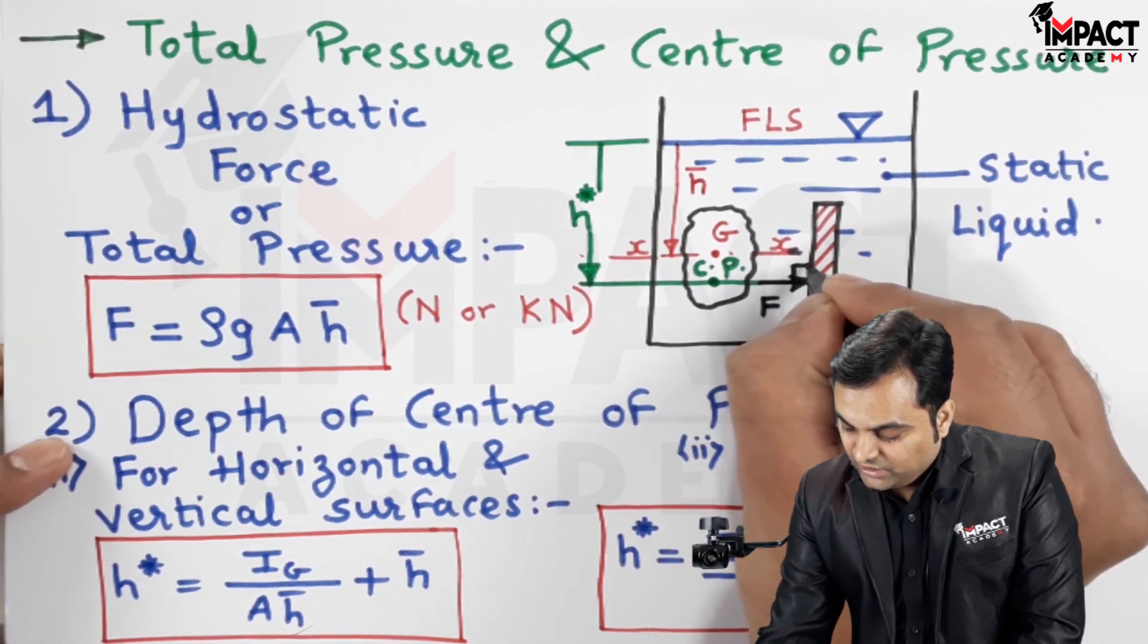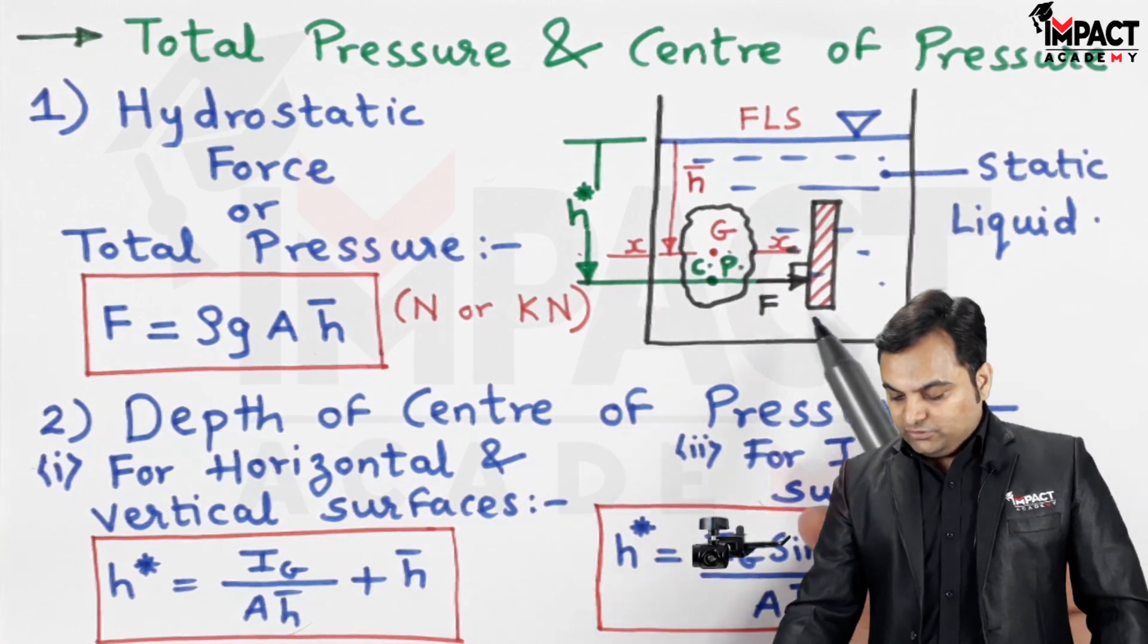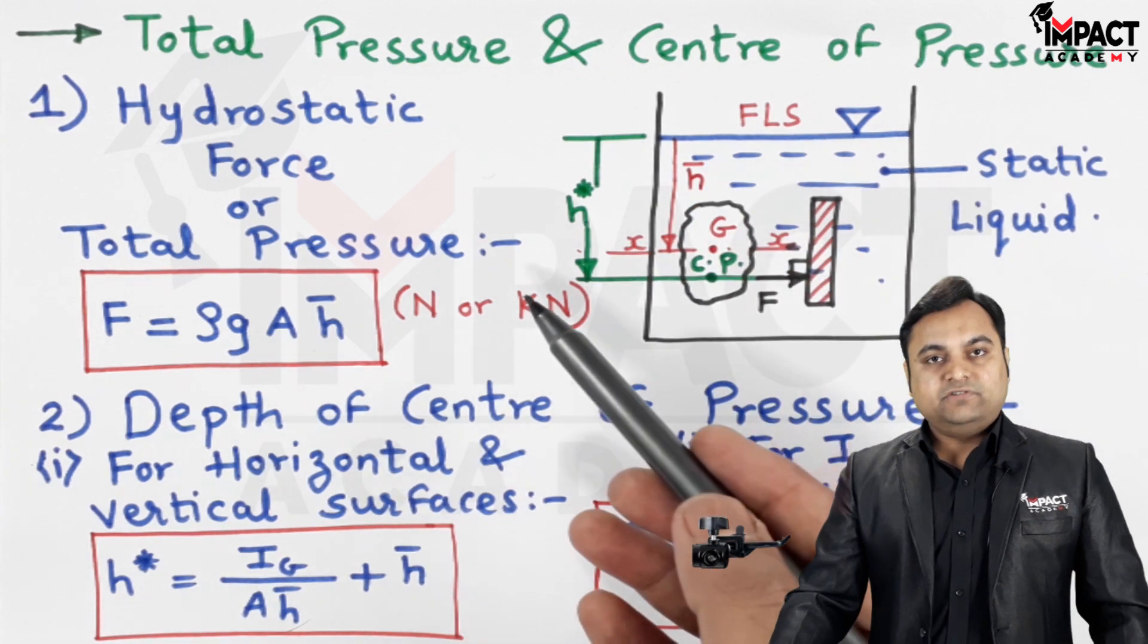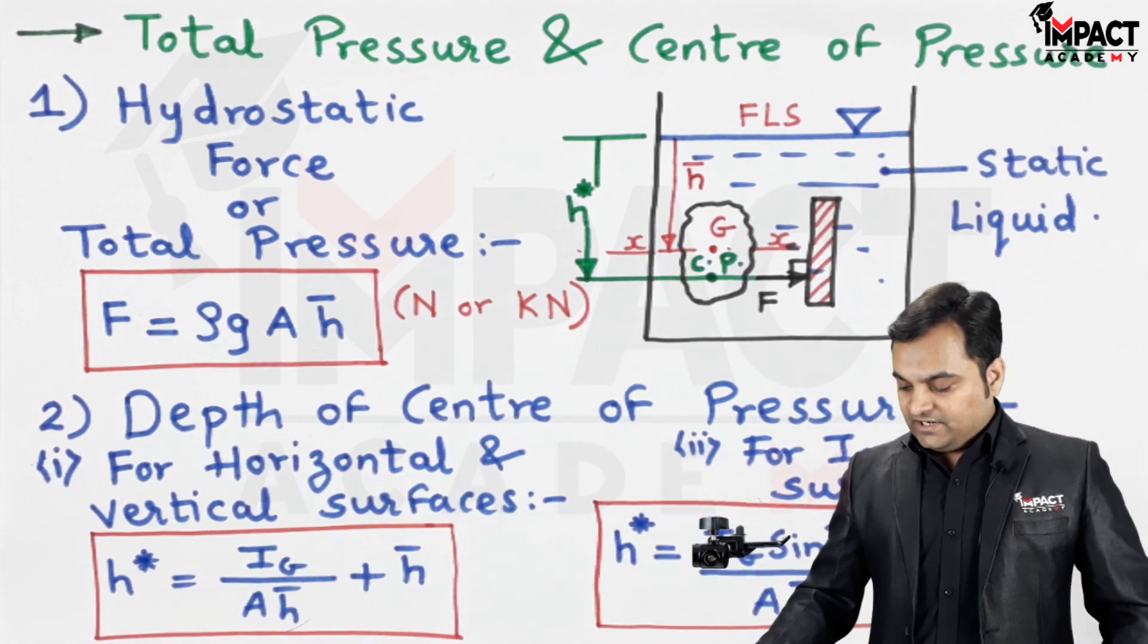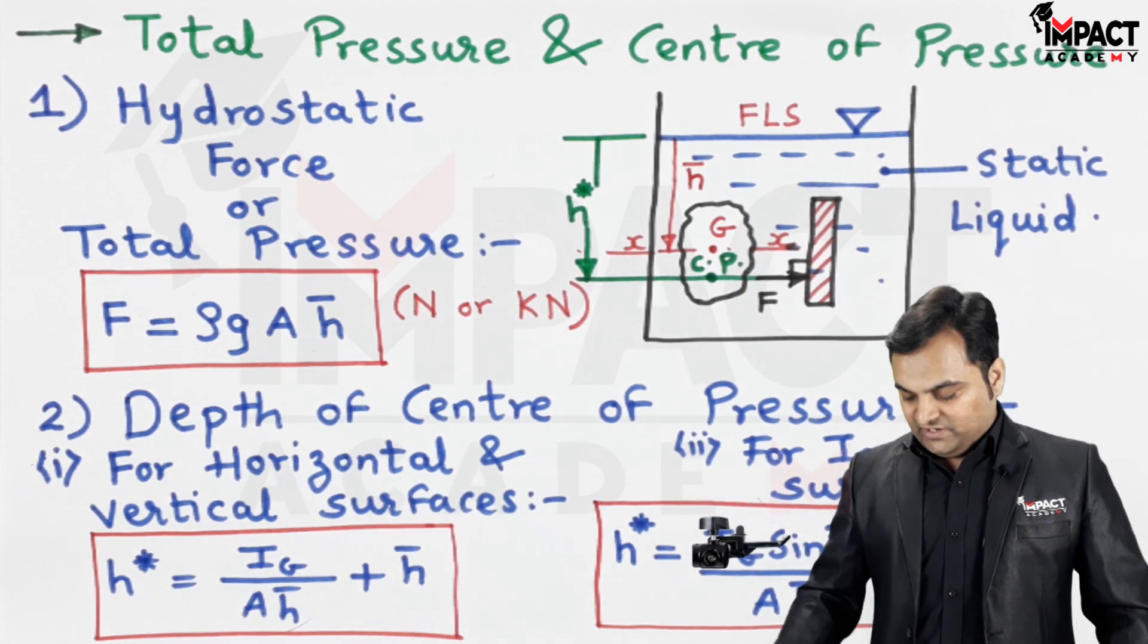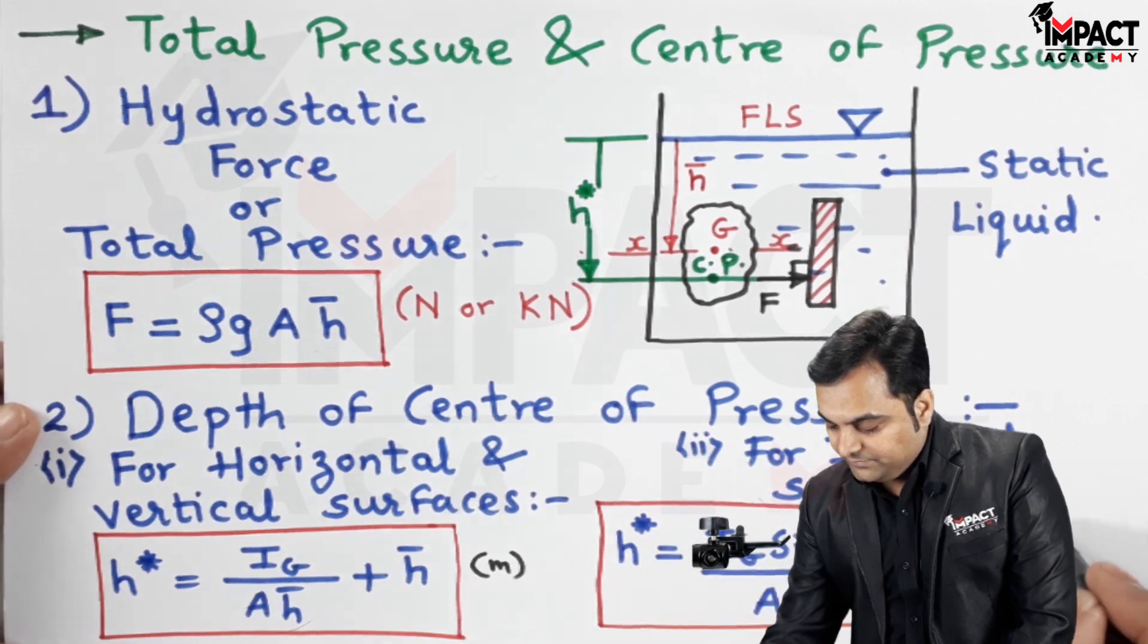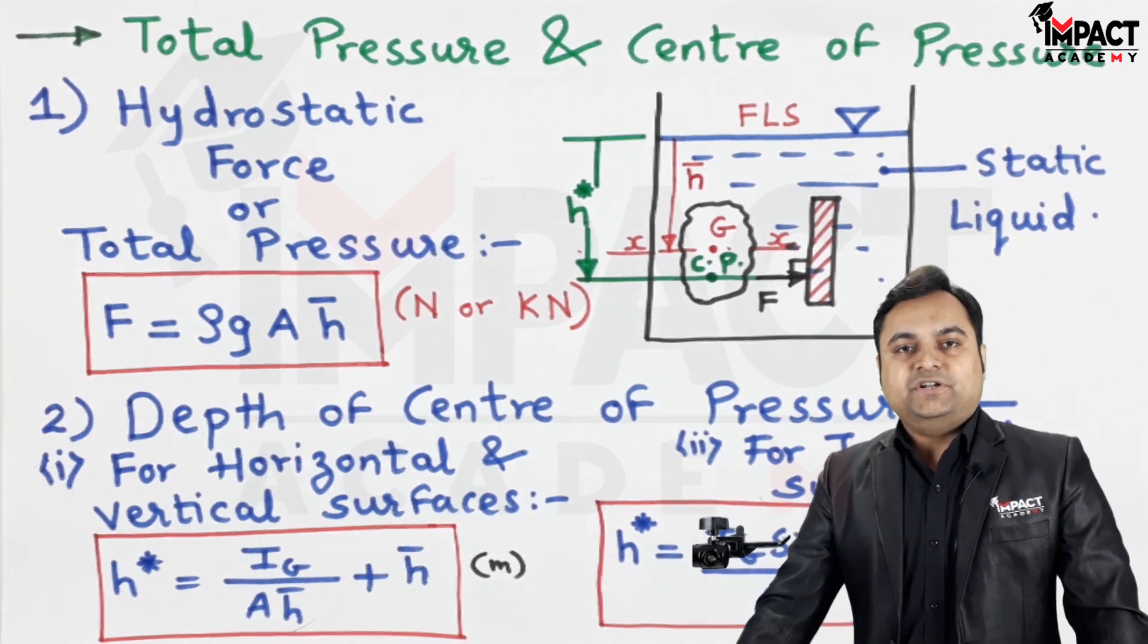This is the location and the total pressure would be acting at the center of pressure. So f is acting exactly perpendicular to it. This is the total pressure also called as hydrostatic force exerted by the static liquid on the plate and its location from the free liquid surface is denoted by h star. While calculation for h star, ig has to be taken parallel to the free liquid surface because the formula is derived in such a way. H star would be having unit of either meter, centimeter, mm etc. That was regarding the total pressure and center of pressure.